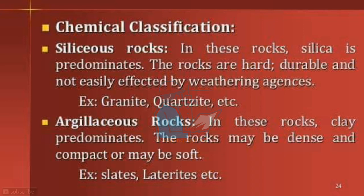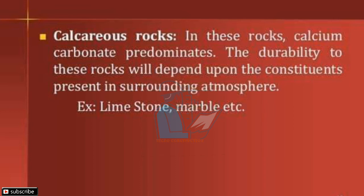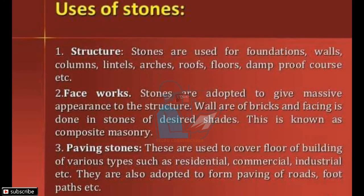In argillaceous rocks, clay is predominant. These rocks may be dense and compact, or soft — for example, slates and laterite. In calcareous rocks, calcium carbonate predominates. The durability of these rocks depends upon the constituents present in the surrounding atmosphere — for example, limestone and marble.